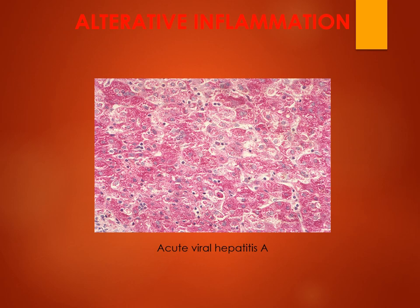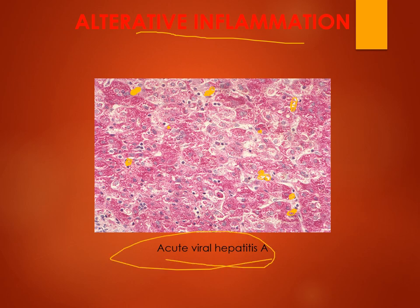This is the microscopical picture of acute viral hepatitis A. Under the microscope we write 'alteration inflammation' because on this slide we cannot see any morphological changes except the death of some cells — called necrosis. When we see only necrosis of some cells and no other morphological criteria, we cannot say it is severe inflammation. It is only the initial phase of inflammation — called alteration inflammation — seen in acute viral hepatitis A.